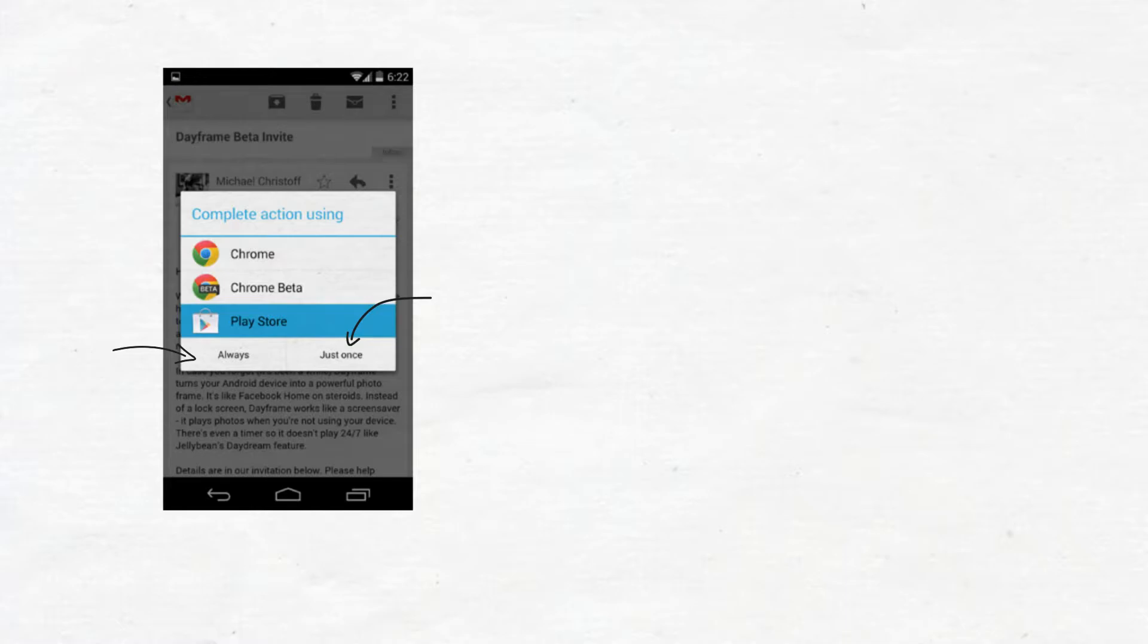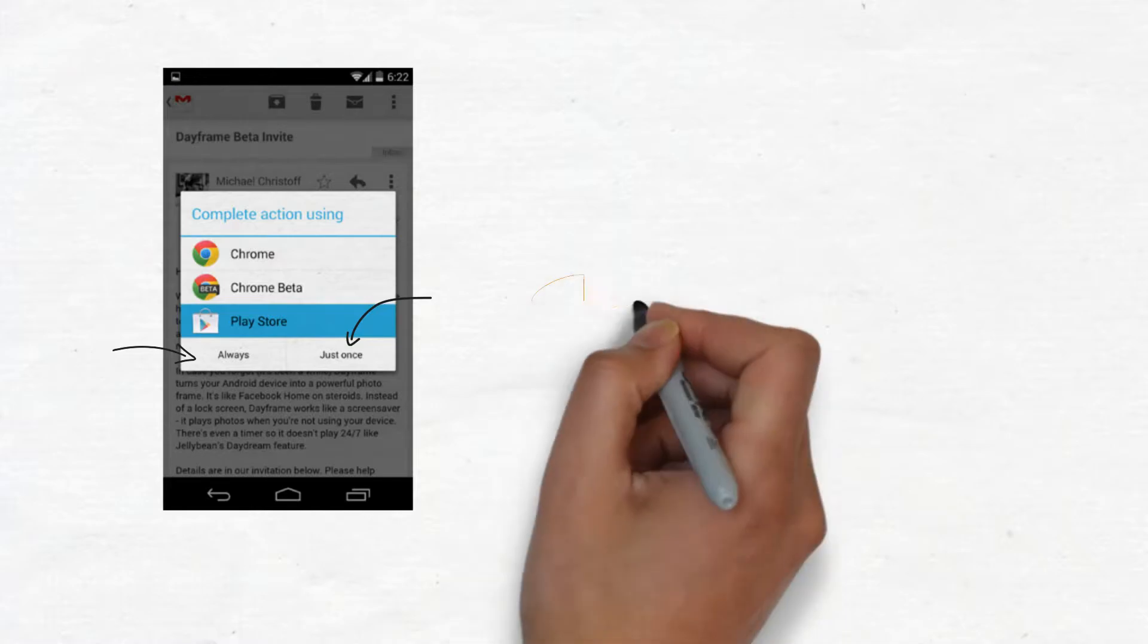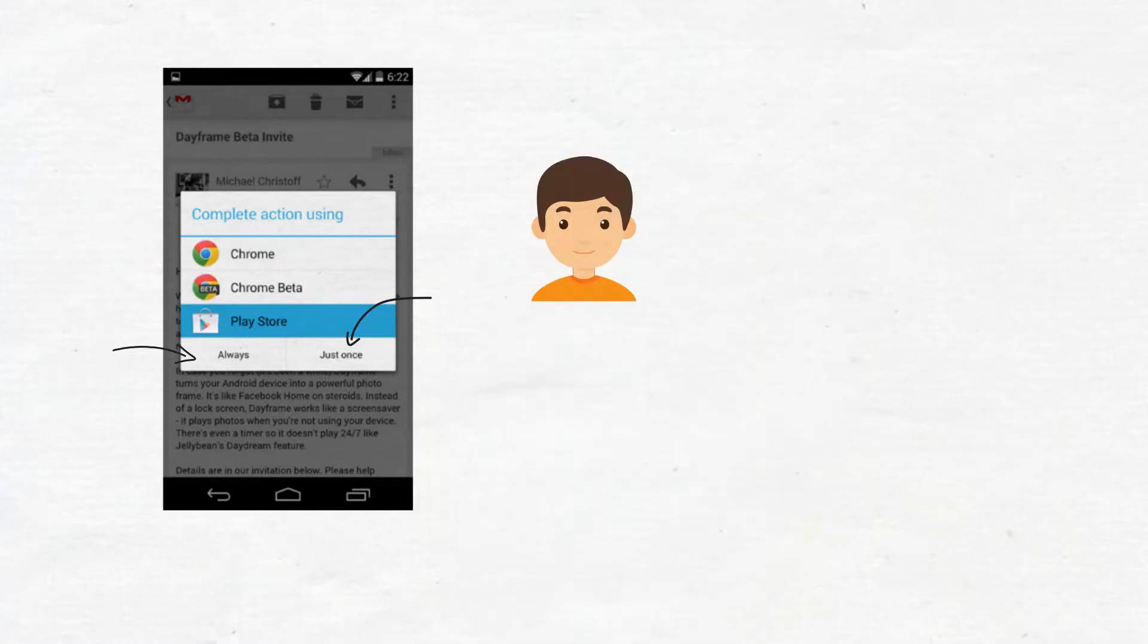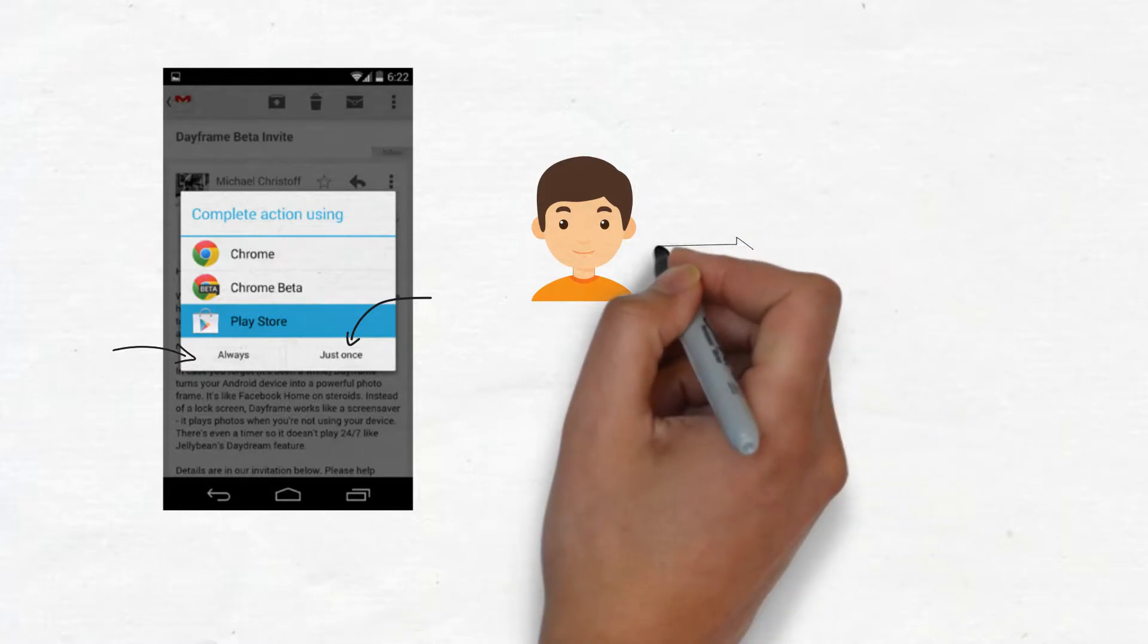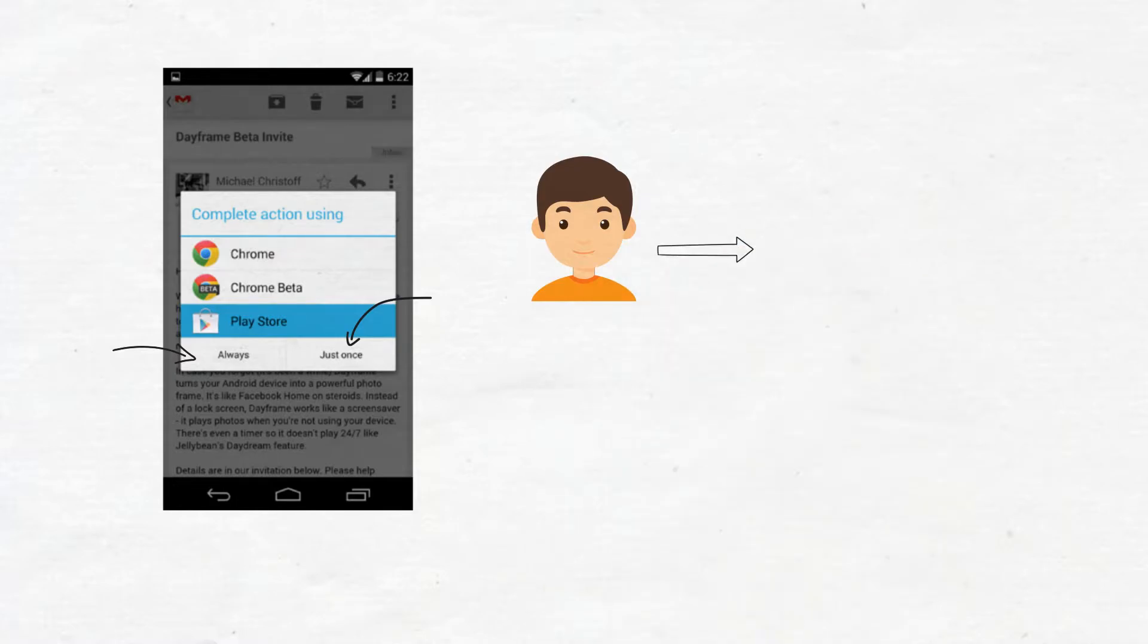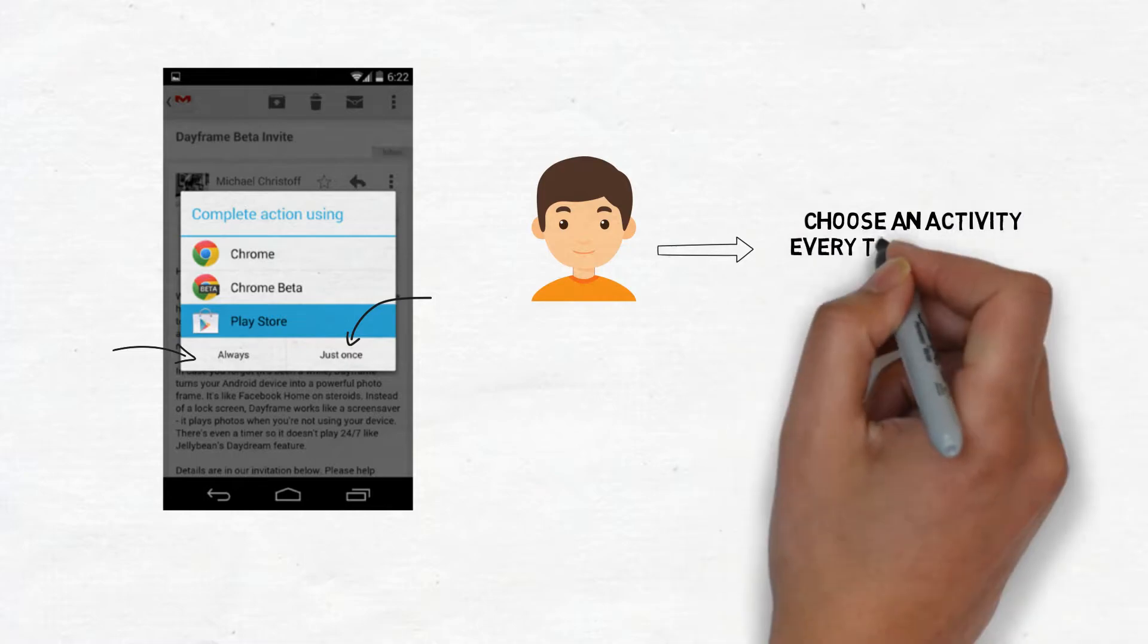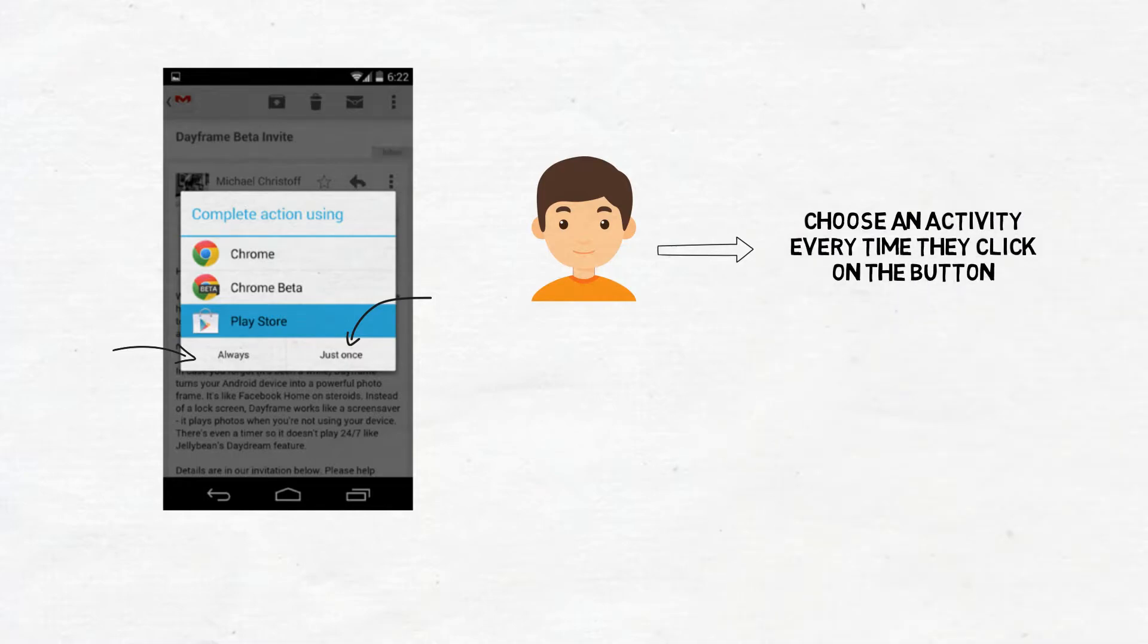There's just one problem with this default behavior. What if you want to guarantee that users can choose an activity every time they click on the button? If they have chosen the option to always use Gmail, for instance, they won't be asked if they want to use Yahoo Mail next time.